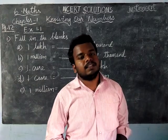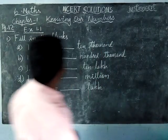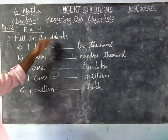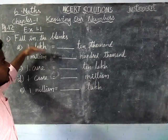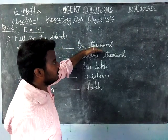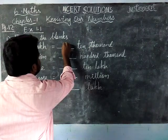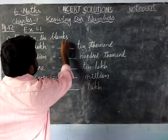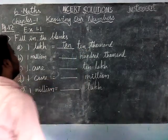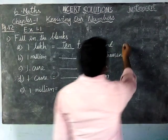This is free of cost — we are not charging anything. Thank you, and we will get into the class. Page number 12, first question: fill in the blanks. 1 lakh is equal to how many 10 thousands? 10 times of 10 thousand. So 10 ten-thousands are equal to 1 lakh.